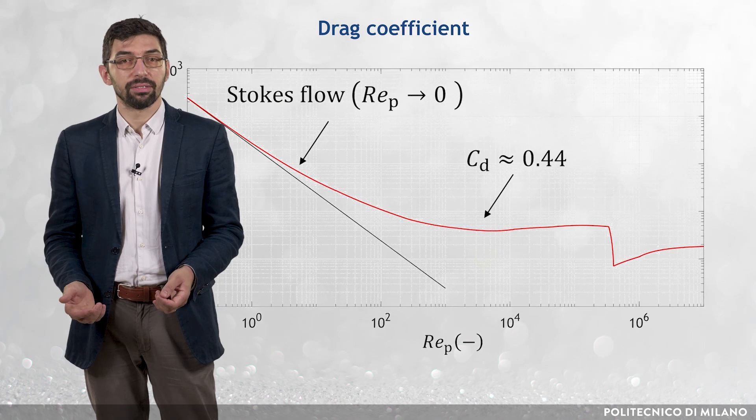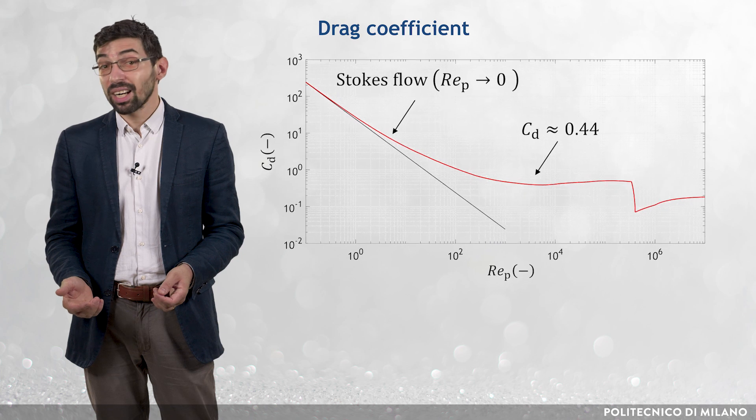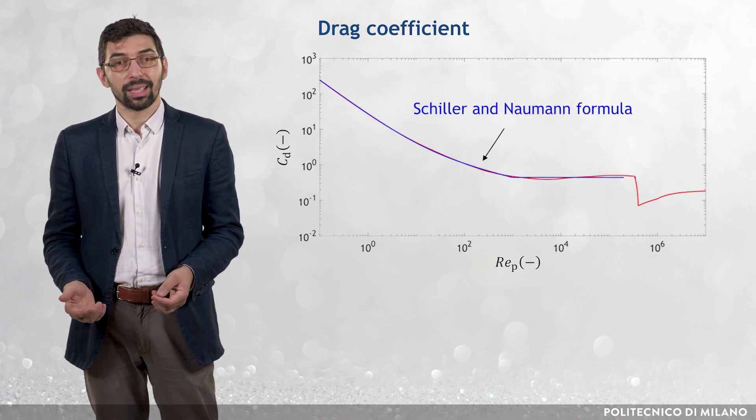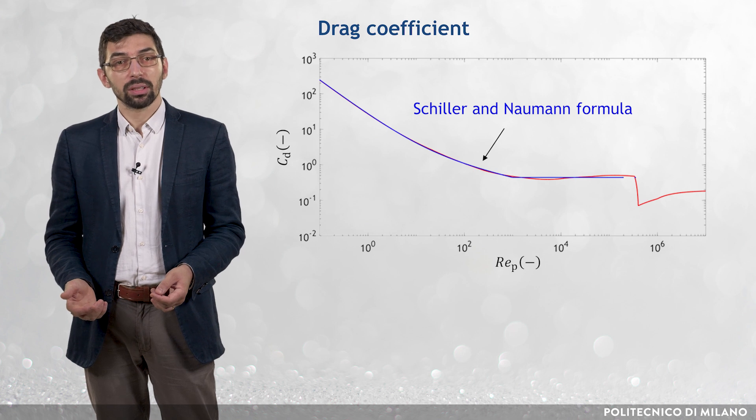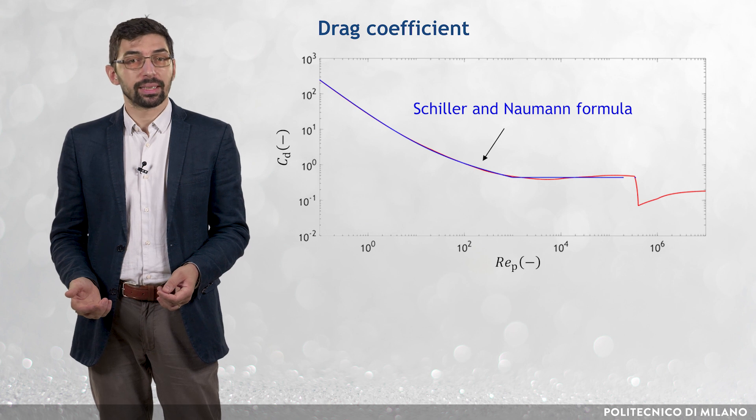In most particle-laden flows of interest in this course, the particle Reynolds numbers are far below the condition of sudden drop. The formula of Schiller and Naumann is widely used to quantify the dependence of the drag coefficient upon the particle Reynolds number,